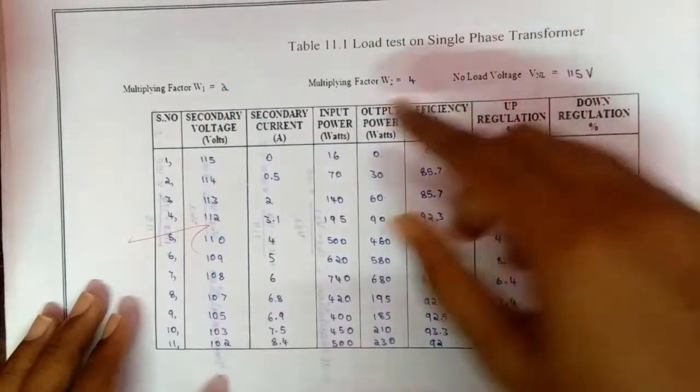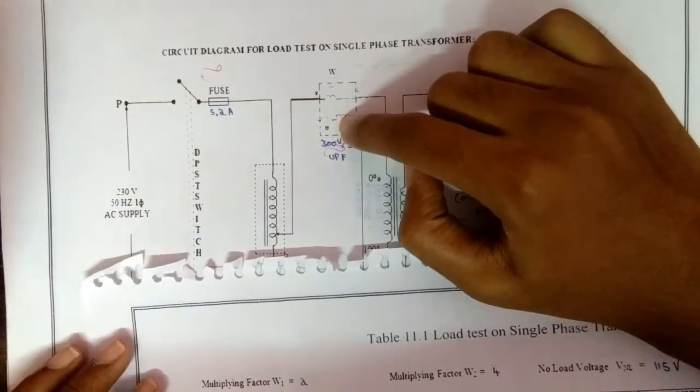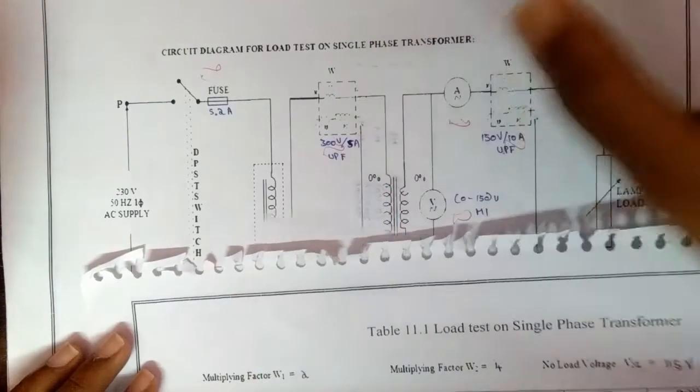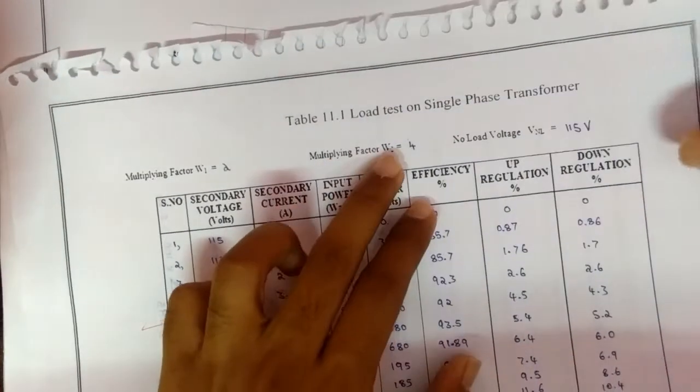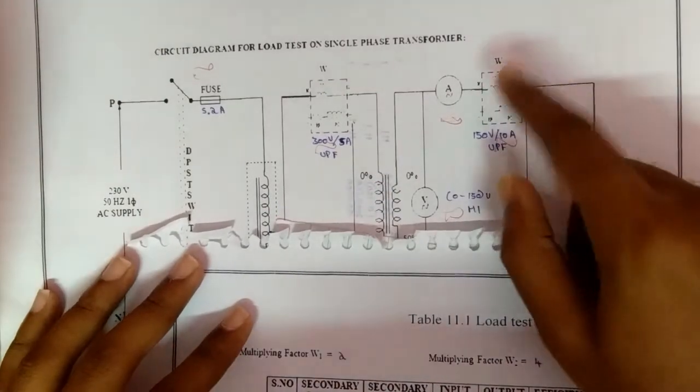The multiplying factor W1 is equal to 2, it is found on the primary side of the transformer where the wattmeter is connected. And the multiplying factor W2 is 4, it is found in the wattmeter of the secondary side.